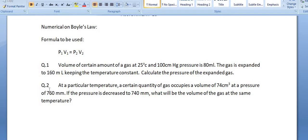Question number two: in this first question, you need to calculate the pressure, that means the value for p2. In question number two, at a particular temperature, a certain quantity of gas occupies the volume of 74 cm³ at a pressure of 760 mm. If the pressure is decreased to 740 mm, what will be the volume of the gas at the same temperature?